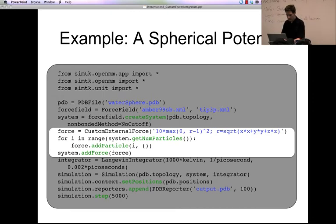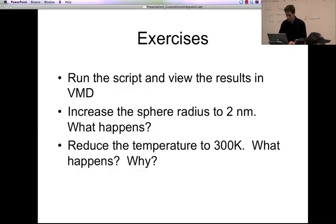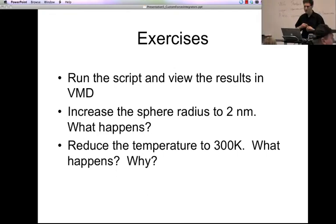So let's take a look at what happens when we do this. So you'll find this example in the examples directory. It is called watersphere.py. So I'm just going to type python watersphere.py. And I just take a moment while it runs. There we go. It's finished running. And it has now created a file called output.pdb, which has the trajectory, the results of that simulation.